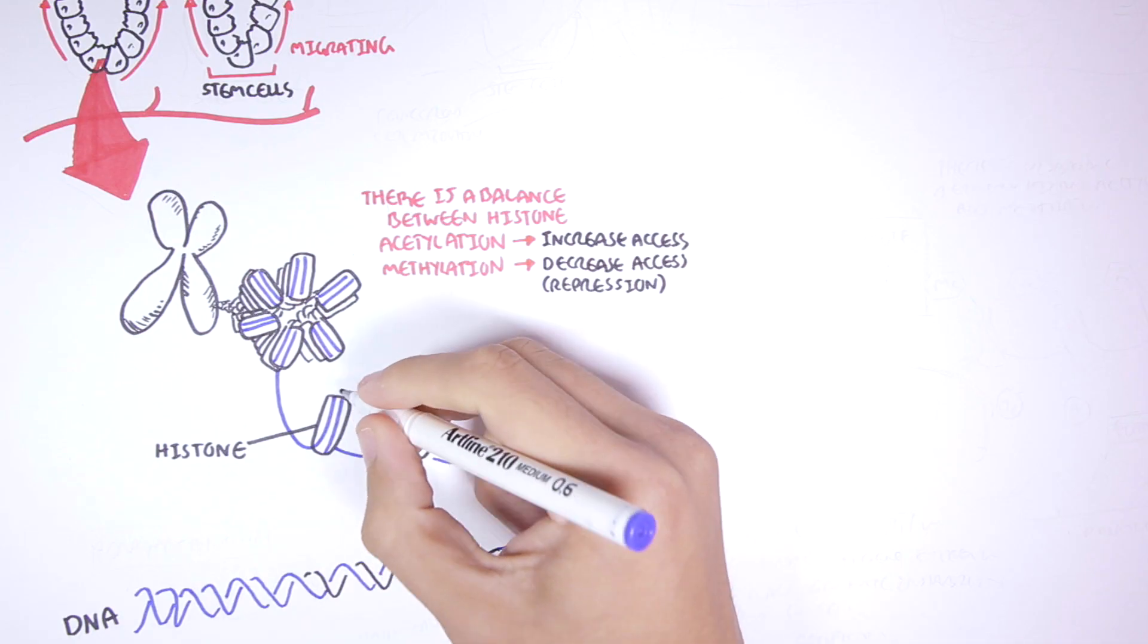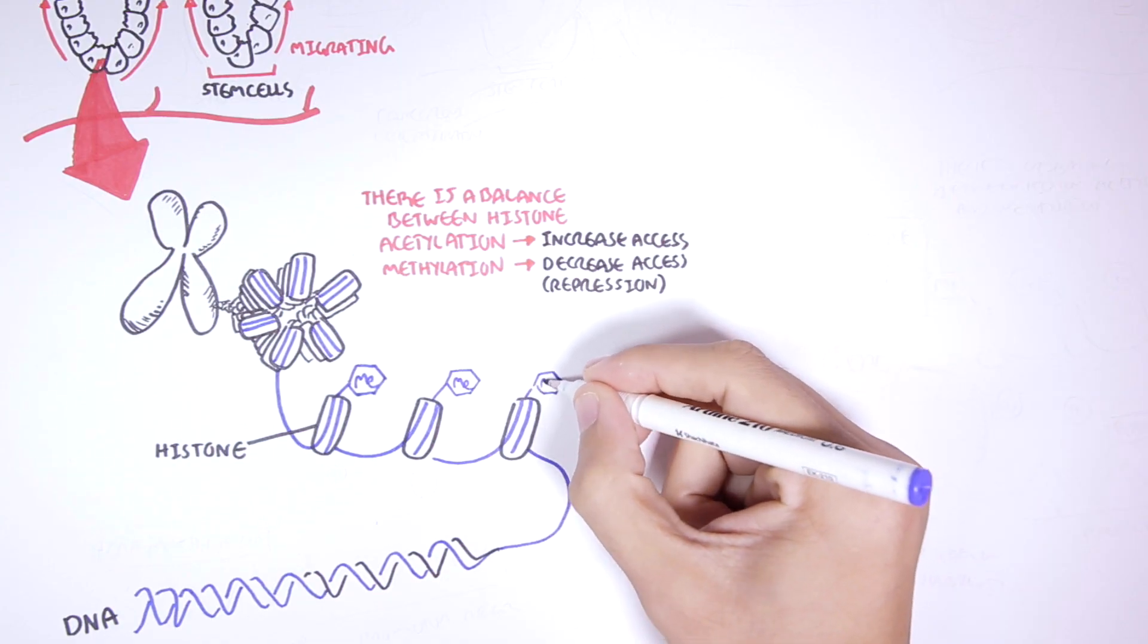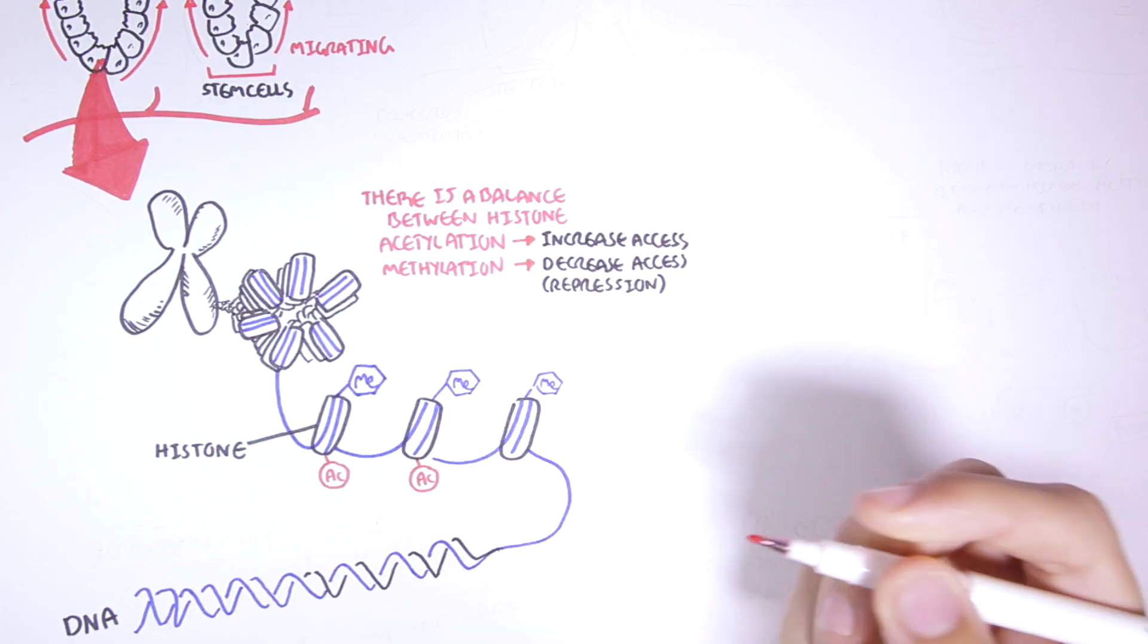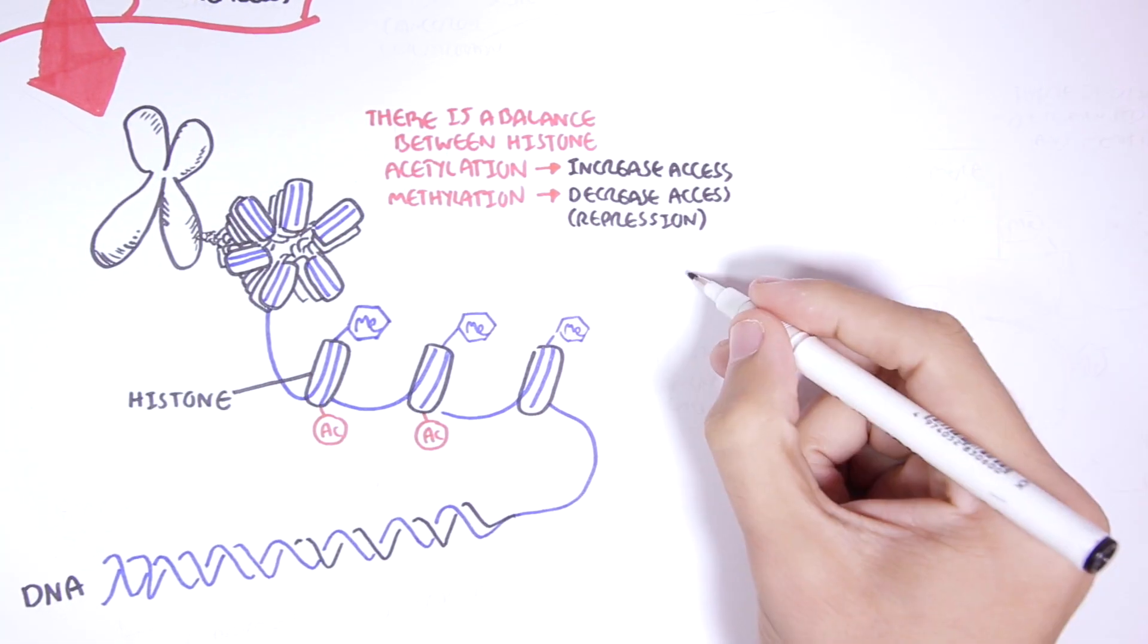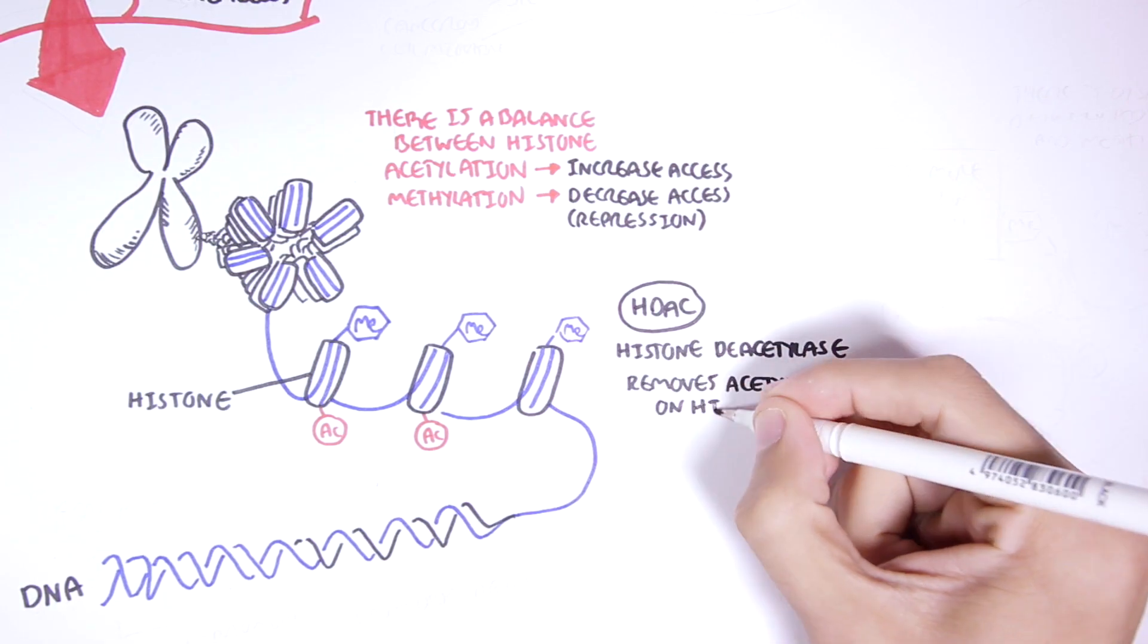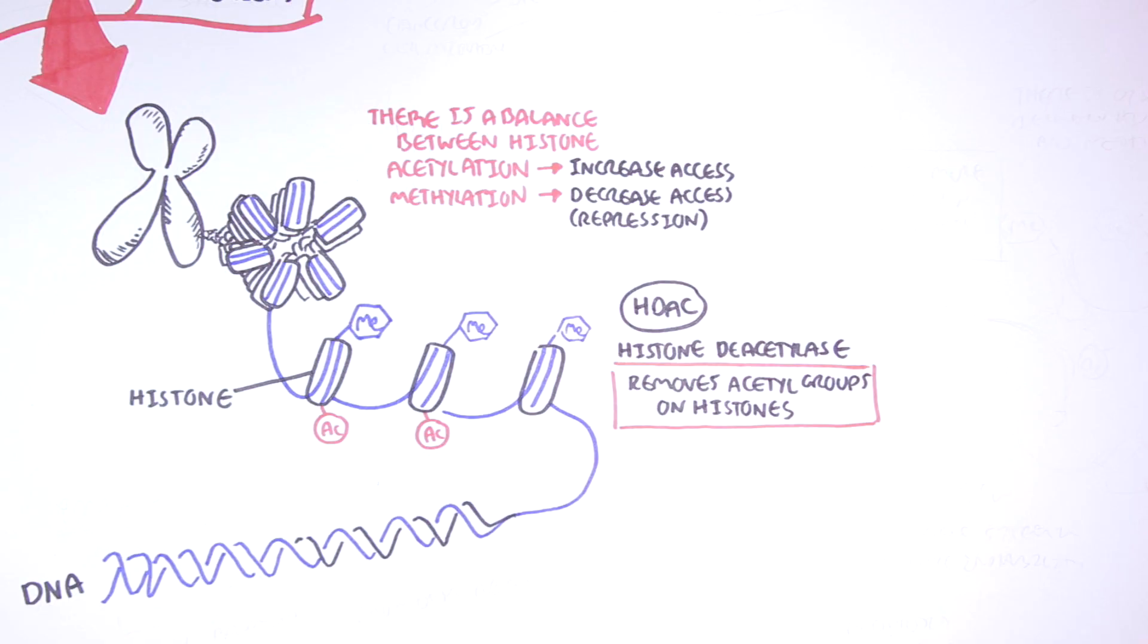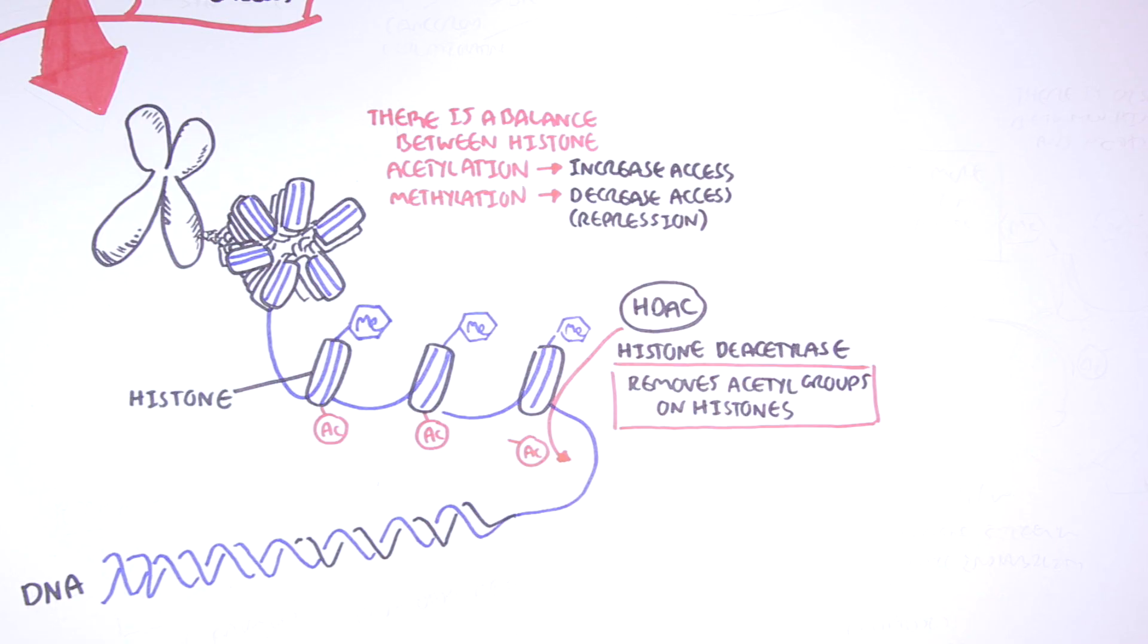Looking at the histones here, we have a balance between histone methylation ME and histone acetylation AC. Now an important enzyme to know is HDAC, which is histone deacetylase. This enzyme essentially removes an acetyl group from the histone. So here the enzyme is removing the acetyl group from this histone. HDAC is an important enzyme in decreasing access for transcription factors.